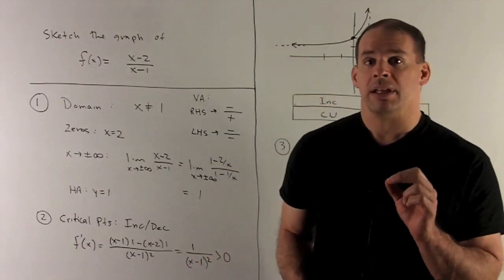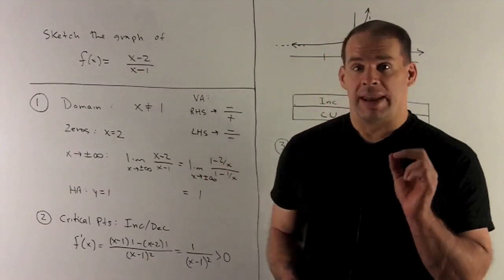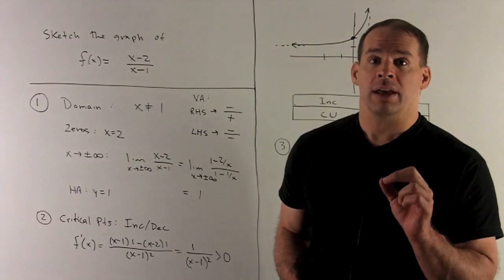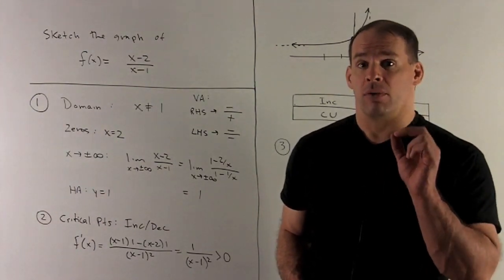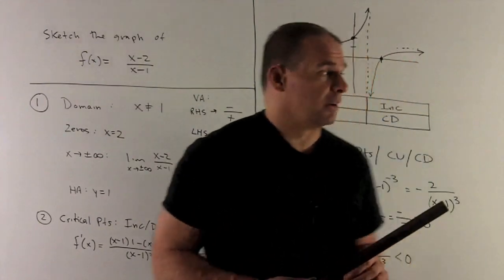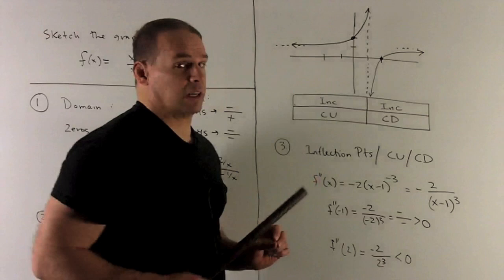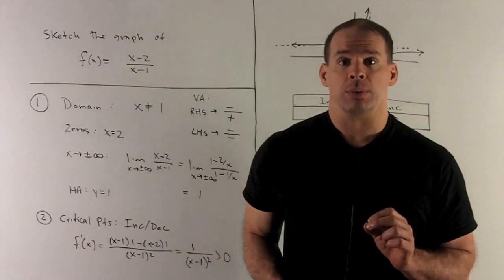Coming in from the right, same idea. On the top, we're going to have a negative. But now on the bottom, coming in from the right, there'll be a point like 1.1. And so we're going to be positive in the bottom, negative over positive. So when I come in from the right, we're going to be going down to minus infinity.